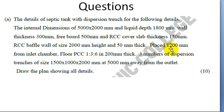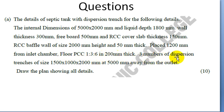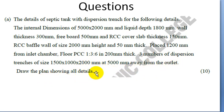The baffle wall is placed 1200 mm from the inlet chamber. Floor PCC mix 1-3-6 is 200 mm thick. There are 3 numbers of dispersion trenches. Draw the plan showing all details.